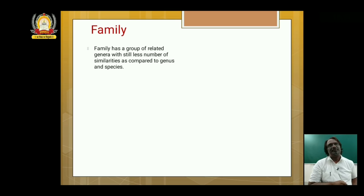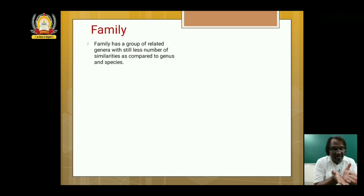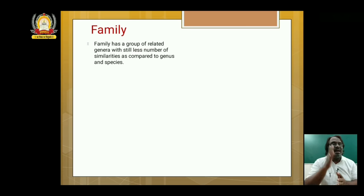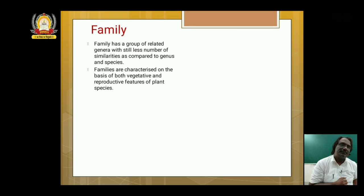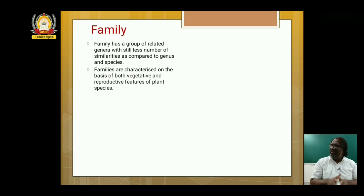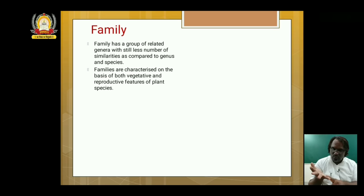Family is a group of related genera, with still fewer similarities as compared to genus and species. Families are characterized on the basis of both vegetative and reproductive features of plants. The root, shoot and leaf are the vegetative characters; the flower is the reproductive character.